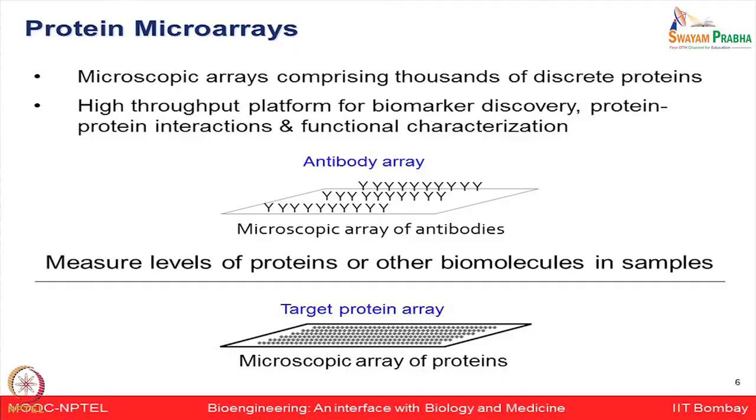With the advent of new technologies in protein microarrays, different types of microarray platforms have been established to look at protein-protein interactions as well as many clinical applications. Protein microarrays are microscopic arrays comprised of thousands of discrete proteins printed on the array surface. These high-throughput platforms can be used for many applications such as biomarker discovery, protein-protein interactions, and various types of functional characterization. You can use different types of contents, and accordingly your array platform could be termed as antibody arrays or protein arrays.